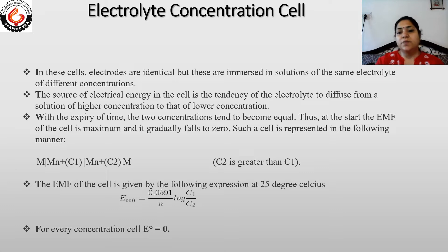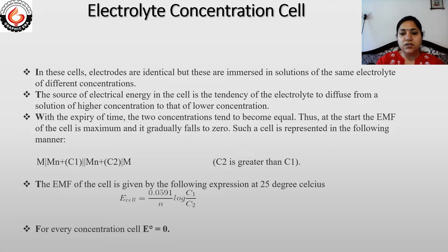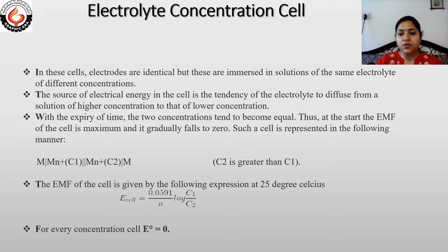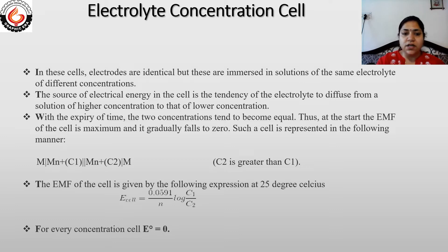Such a cell is represented in the following manner. Here M stands for the metal, M^(N+) stands for the electrolyte solution, C1 stands for the concentration of the first half cell, and C2 represents the concentration of the electrolyte in the second half cell. Both metals are the same — meaning the electrodes are the same — and the electrolytic solutions are the same, but only the concentration of the electrolyte solution differs. C1 and C2 represent different concentrations, and the two vertical lines represent the salt bridge between the two half cells.